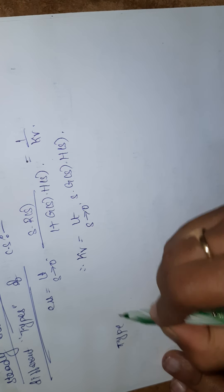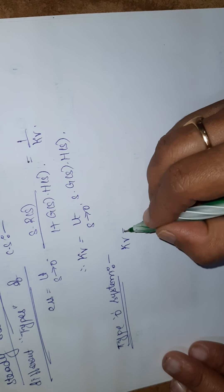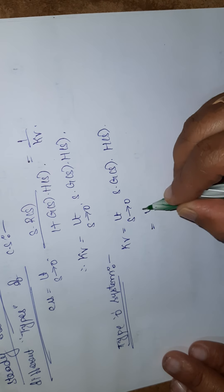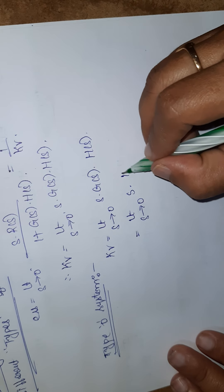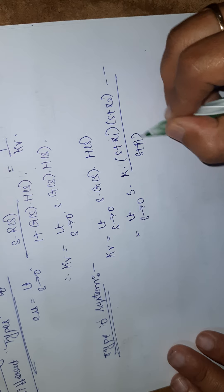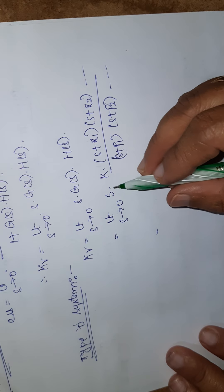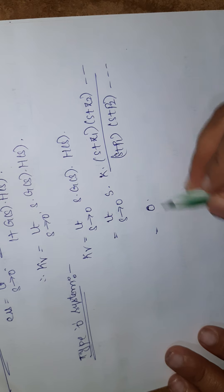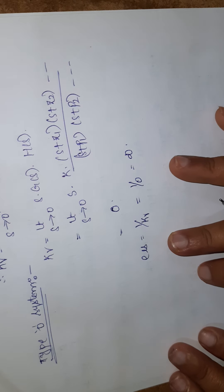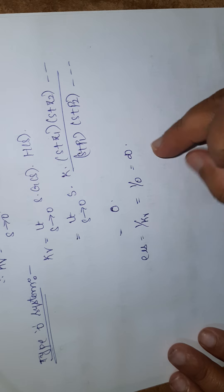For a type 0 system with ramp input, K_v = limit s→0 of s·k·(s+z1)(s+z2).../[(s+p1)(s+p2)...]. Substituting s=0, something multiplied by 0 gives K_v = 0. Therefore, E_ss = 1/K_v = 1/0 = infinity. So for type 0 systems, when the input is ramp, the steady state error is infinity.